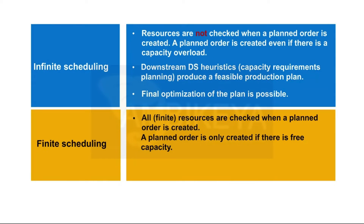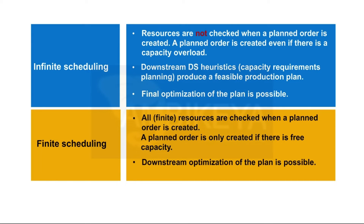Planning with finite scheduling is only useful if used in conjunction with the CTP scenario. A production plan that has been generated in finite production planning can be processed subsequently in optimization. For example, you might want to use this optimization to reduce the number of delays resulting from the original schedule.